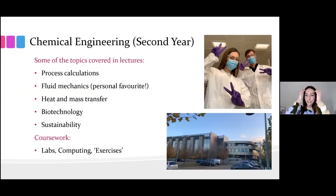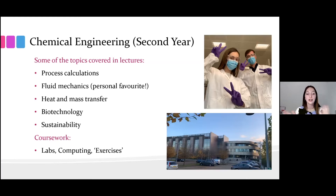In terms of chemical engineering this year, topics covered in lectures include process calculations, fluid mechanics — a personal favourite of mine — heat and mass transfer, biotechnology, sustainability, and others. There's also a coursework element composed of labs, computing, and exercises. Relative to first-year engineering there are fewer labs, but they're very different in nature and include a report that contributes to your grade. For computing, in first year we looked at Python, whereas this year we've looked at MATLAB and Unisim, which is a process simulation software.